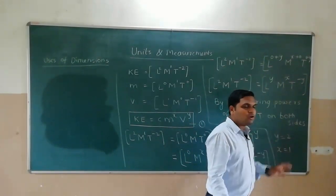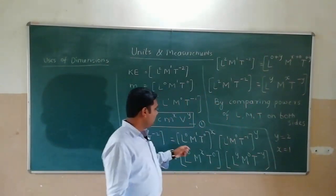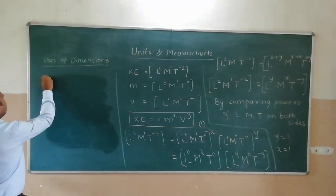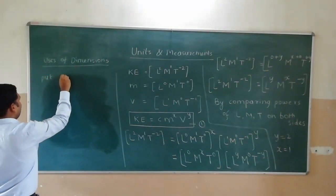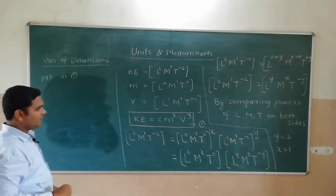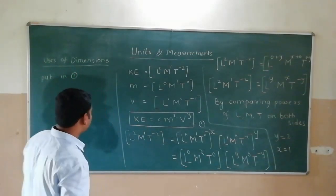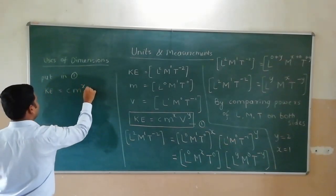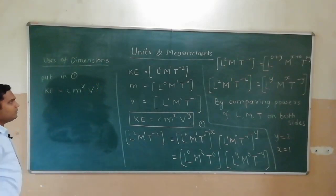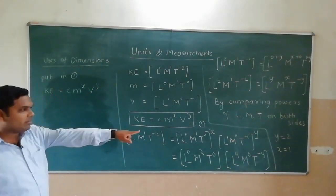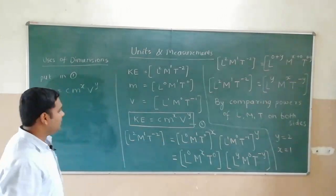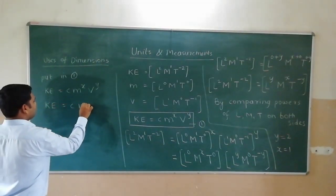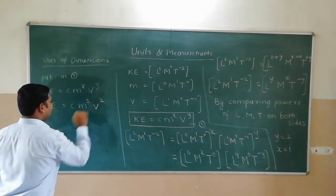Now, x and y value, which can we substitute? Equation 1. So, put in equation 1. What is equation 1? Kinetic energy is equal to C into m raise to x and v raise to y. And x ka value, 1 and y ka value, 2. So, kinetic energy is equal to constant C, x ka value 1 and y ka value 2.